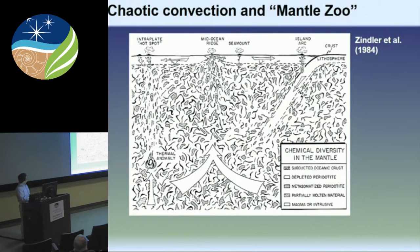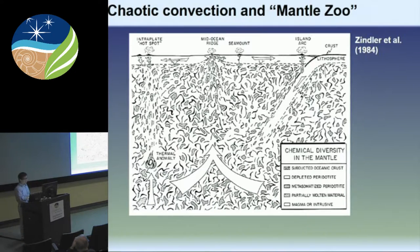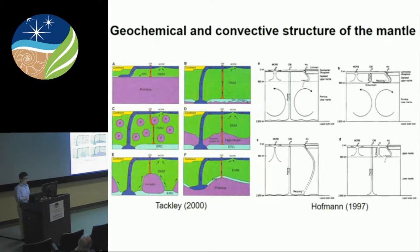The first half or slightly more concerns the global geochemical and convective structure of the Earth's mantle. Then I'd like to talk about subduction zone processes, how these materials are processed, and then hopefully a synthesis at the end. So I start the first part concerning the mantle structure. This is a kind of classical view of how subducted materials are distributed in the mantle.